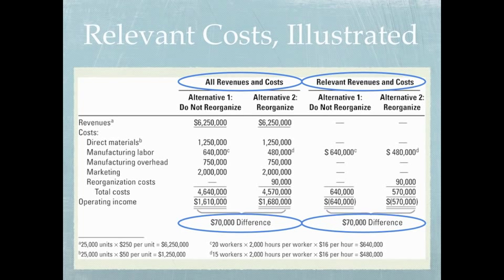If you look at the last two columns, you can see we've found the same information by inputting less data, so we're saving time. For example, look back at revenues — revenues do not change based on either alternative, so we just leave that out because that's not relevant information and it's not going to affect our decision.